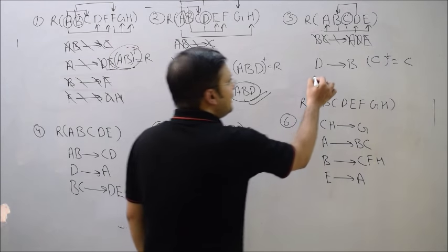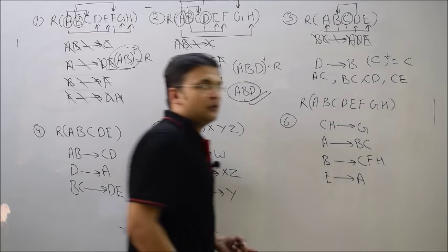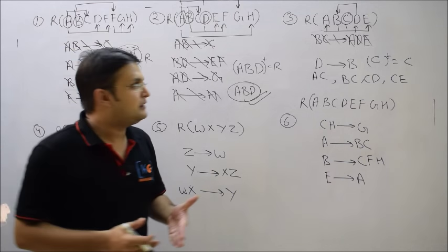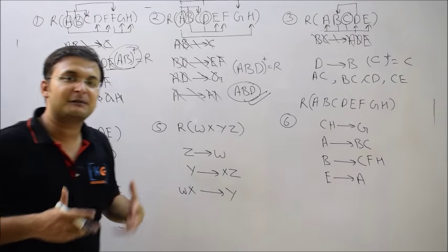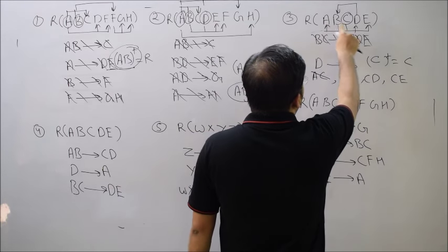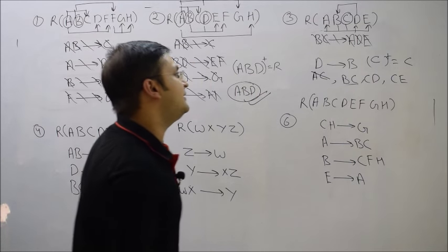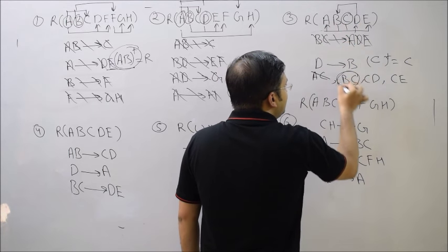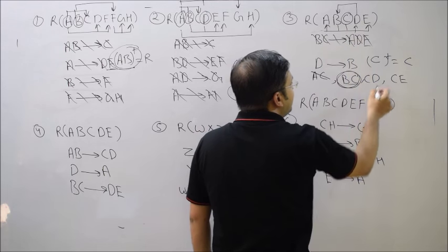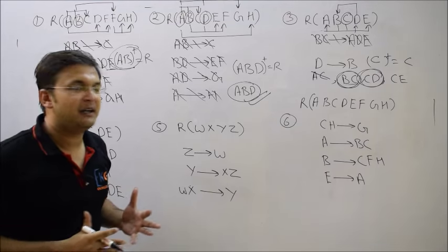Let me try combinations: AC, BC, CD, and CE. Is BC a candidate key? From BC I can find A, D, and E — yes, BC is a candidate key. Now is CD a candidate key? From D I can find B, and from BC I can find everything — yes, CD is also a candidate key. Is CE a candidate key? With C and E together I cannot find the remaining attributes, so CE is not a key.